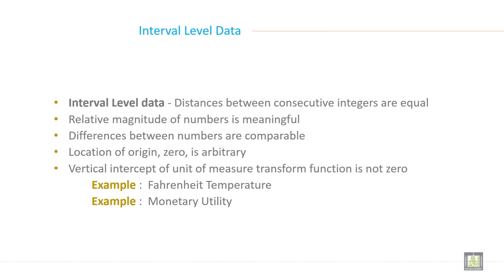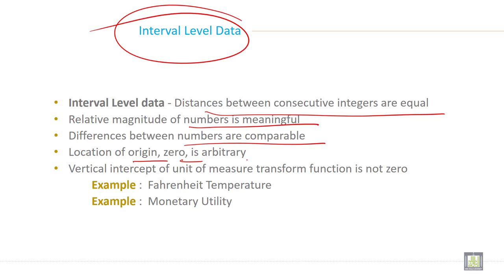The third type of data measurement technique is interval level data. In interval level, distance between consecutive integers are equal. Relative magnitude of numbers is meaningful. Differences between numbers are comparable. Location of origin zero is arbitrary.